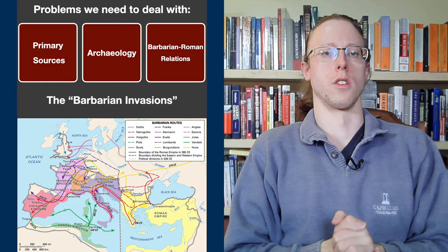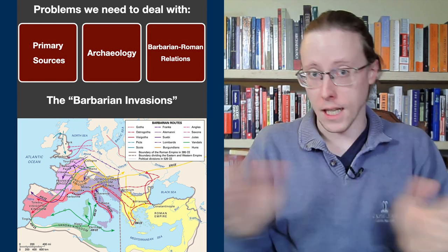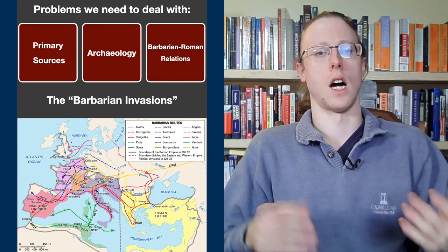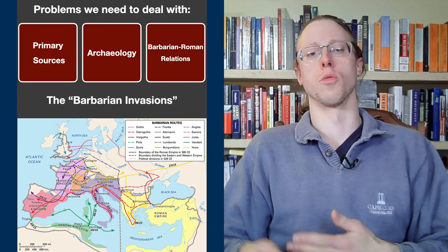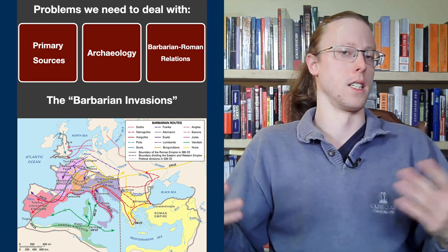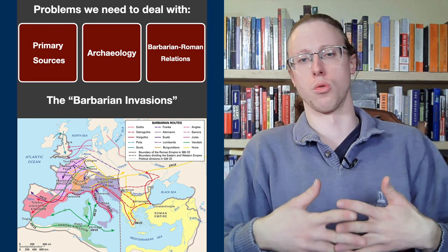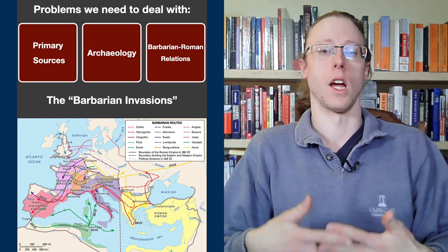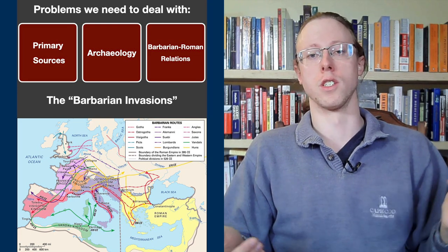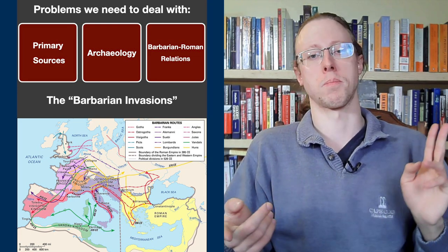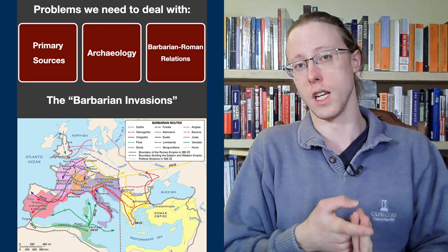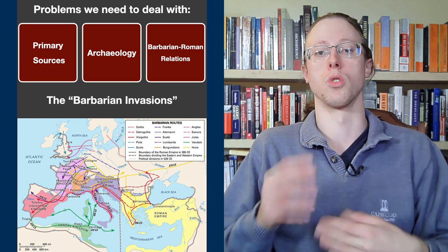Hey everybody, welcome back to The Historian's Craft. Past videos of mine have really tended to focus on society on either side of the Rhine-Danube frontier in late antiquity. What I want to do in this one is try to bring that together, or at least kind of start to. But in order to really do that, there are some problems we need to tackle — some deal with sources, some deal with how we conceptualize barbarians and Romans. Not everything will be dealt with in this video, but this is going to start.